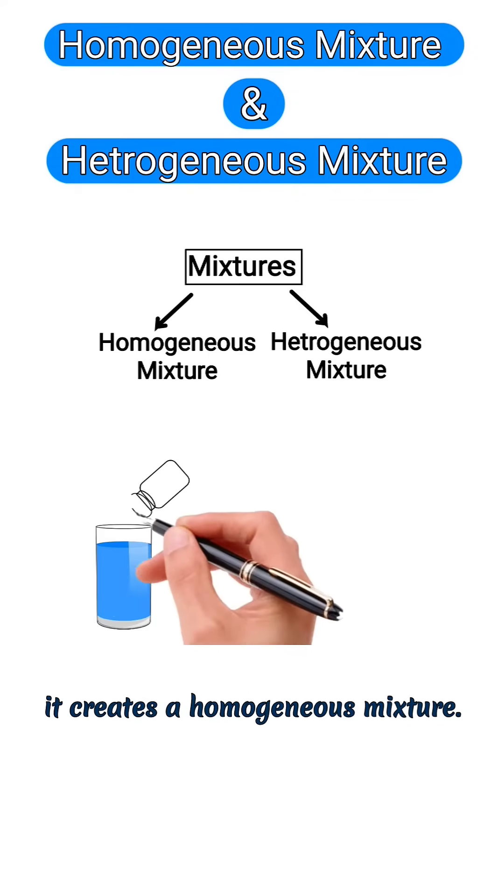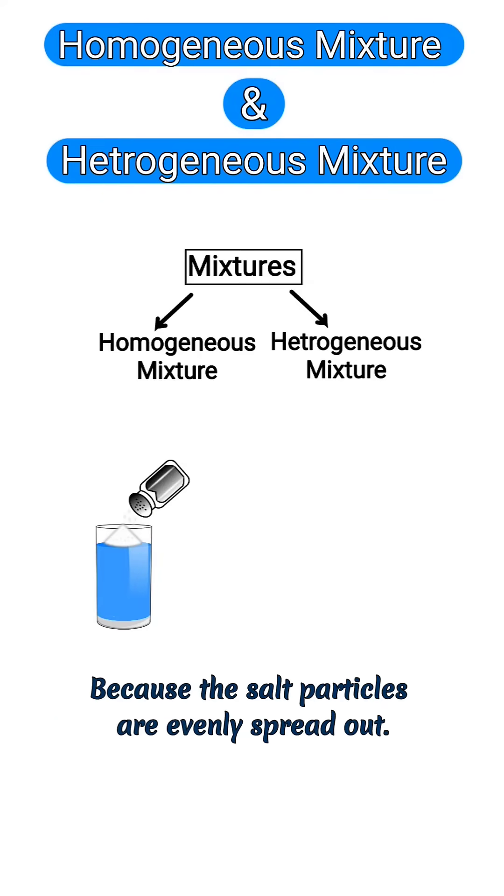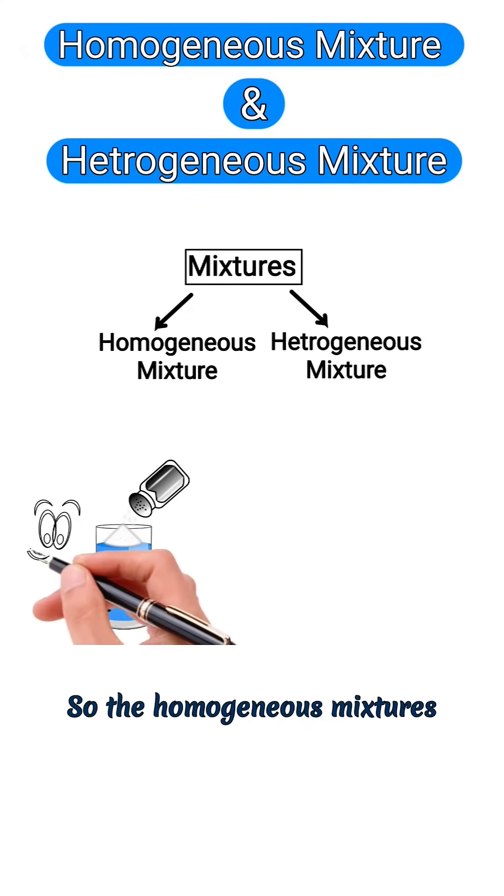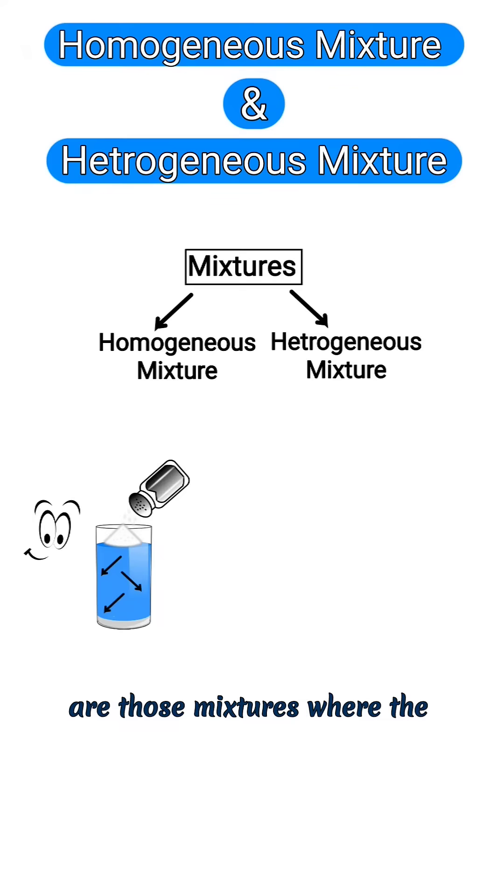salt in water, it creates a homogeneous mixture because the salt particles are evenly spread out. You can't see the salt anymore, but it's still there. So homogeneous mixtures are those mixtures where the substances are uniformly distributed